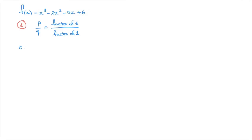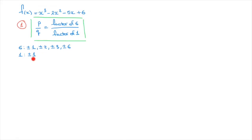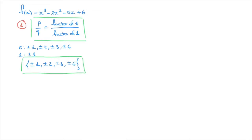The factors of 6 are plus or minus 1, plus or minus 2, plus or minus 3, and plus or minus 6. The factors of 1 are just plus or minus 1. Since we're already considering the plus or minus of each factor of 6, we only need to consider positive 1 as a factor of 1. So the possible rational roots are plus or minus 1, plus or minus 2, plus or minus 3, and plus or minus 6. Step 1 is done — we have a list of 8 potential rational roots for this polynomial function.